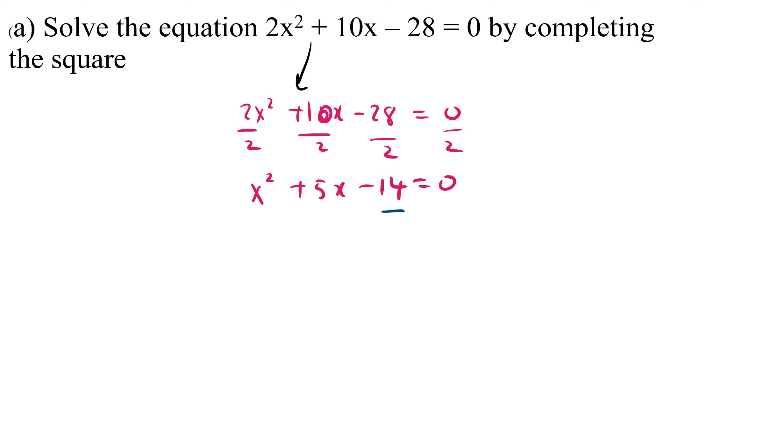I'm going to take 14 to the other side. It will be x² + 5x = 14. Then we're going to add b over 2a square both sides. In this case, it means you're going to have x² + 5x plus b is 5 over 2 times 1.